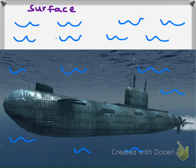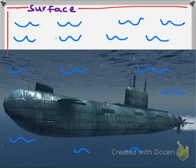If this is the top, if this is out of the water right here — so this is the surface — the submarine is 500 feet below. So to show that it's below, we're going to use a negative. The negative represents that it's under the water.